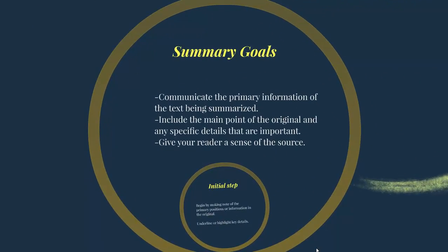When you're preparing a summary, you have to think about what the goals are of a summary. There are essentially three main goals. The first is to communicate the primary information of the text being summarized — what the text is all about, what it's trying to say. If it's an argument, what the primary argument is. If it's an informational piece, what primary information the original is trying to get across to its reader.